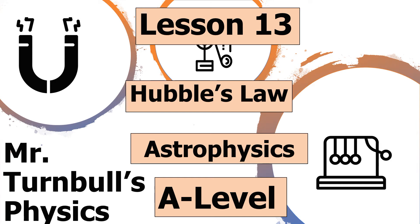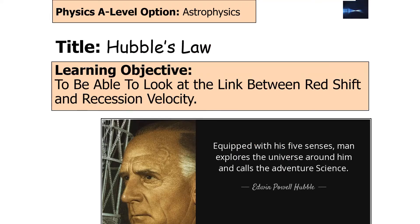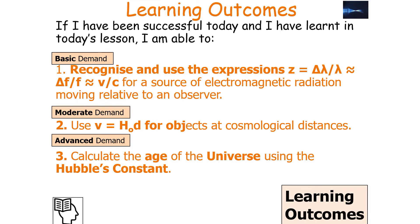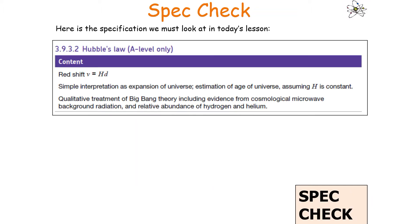Hello, and welcome to today's lesson on Hubble's Law. In today's lesson, we're going to look at the link between redshift and recession velocity. By the end, we should be able to recognise and use the expressions for redshift, use the idea of V equals H₀D for objects at cosmological distances, and calculate the age of the universe using Hubble's constant, linking to the AQA A-level physics specification on Hubble's Law.